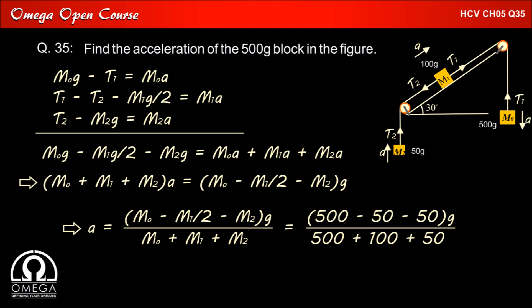Putting the values M0 = 500 gram, M1 = 100 gram, and M2 = 50 gram, we get A = (500 - 50 - 50)g / (500 + 100 + 50). That is 400g/650 which on simplification gives 8g/13. This is our answer.